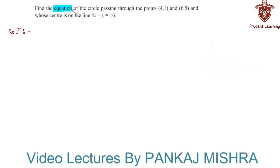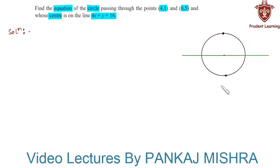Find the equation of the circle passing through the points (4,1) and (6,5) and whose center is on the line 4x plus y equals 16. Let us see the solution for this problem. We have a circle whose center is on the line 4x plus y equals 16, and this circle passes through two points (4,1) and (6,5).